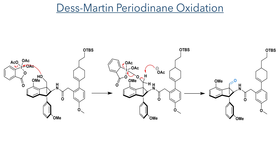The next step was to oxidise the primary alcohol using Dess-Martin periodinane, which we've seen several times before. Attack of the hydroxyl group on the hypervalent iodine centre creates a new iodine-oxygen bond. The liberated acetate can act as a base, which deprotonates the geminal hydrogen, completing the oxidation of the alcohol to an aldehyde.